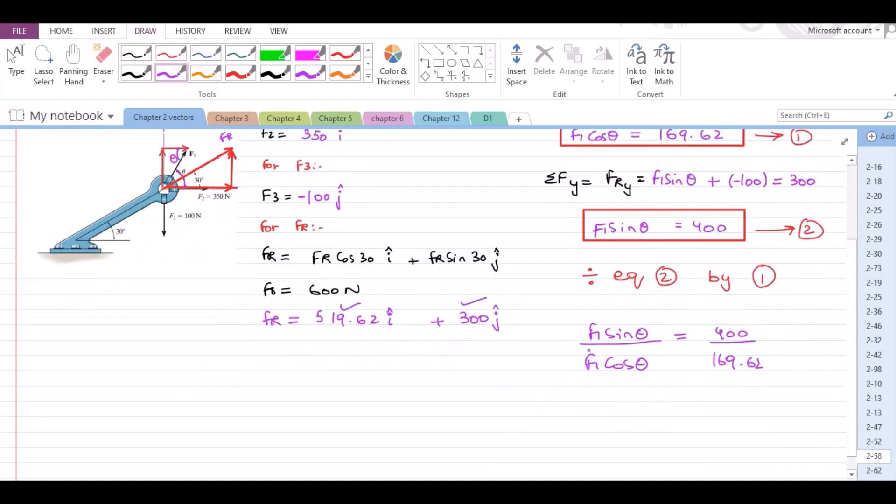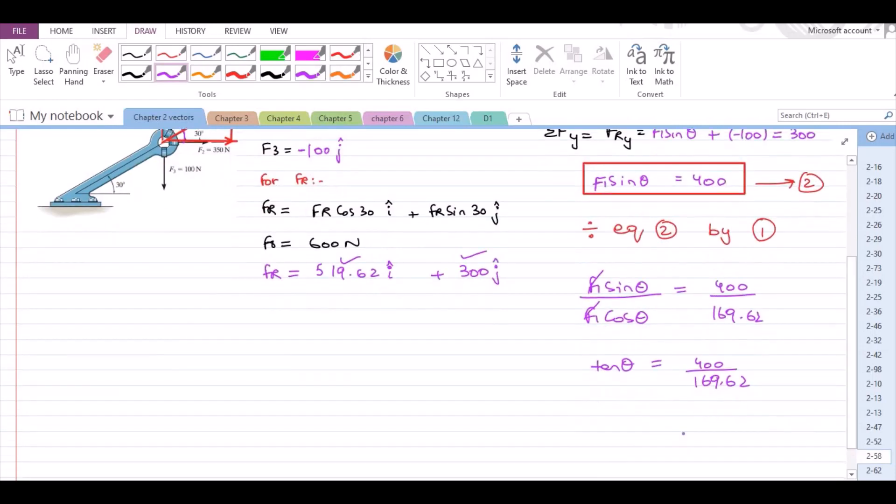This becomes, F1 cancels out, we have tan theta equals 400 over 169.62. So from here theta equals 67.02 degrees. Now this is our first answer.